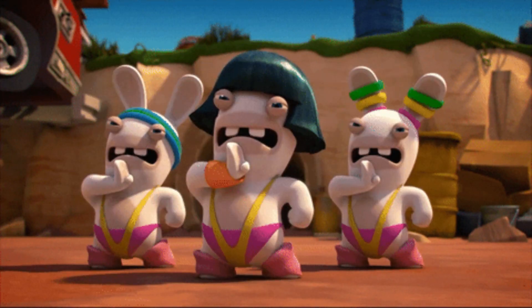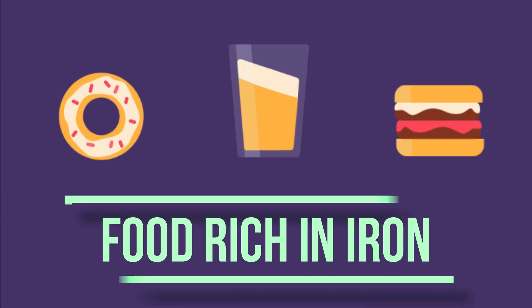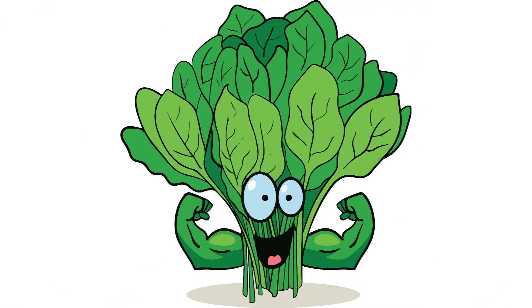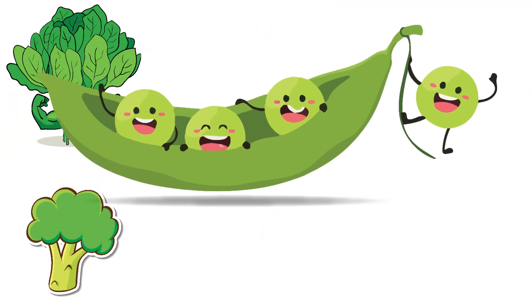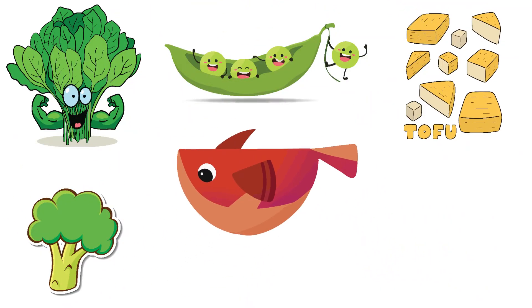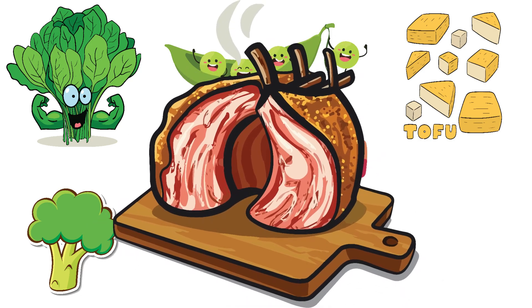Food rich in iron include spinach and all kinds of greens, broccoli, peas, tofu, fish, and iron-rich meats like beef and lamb.